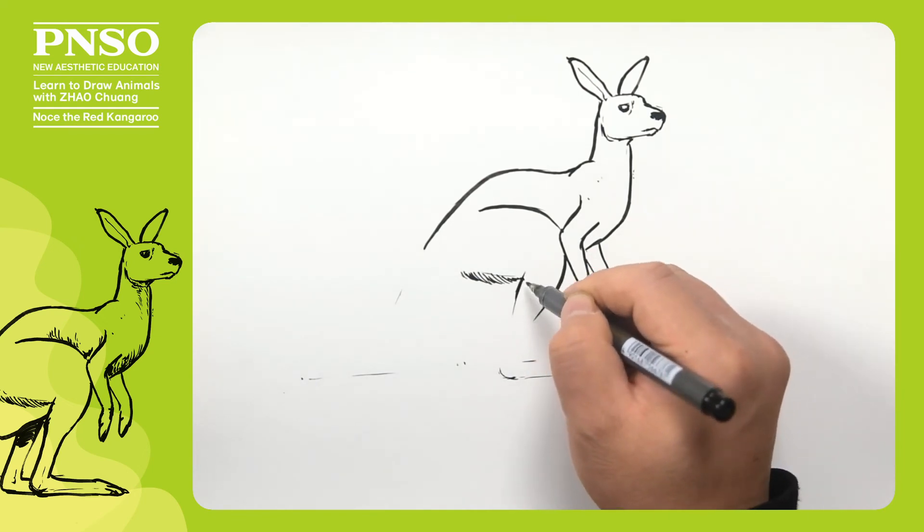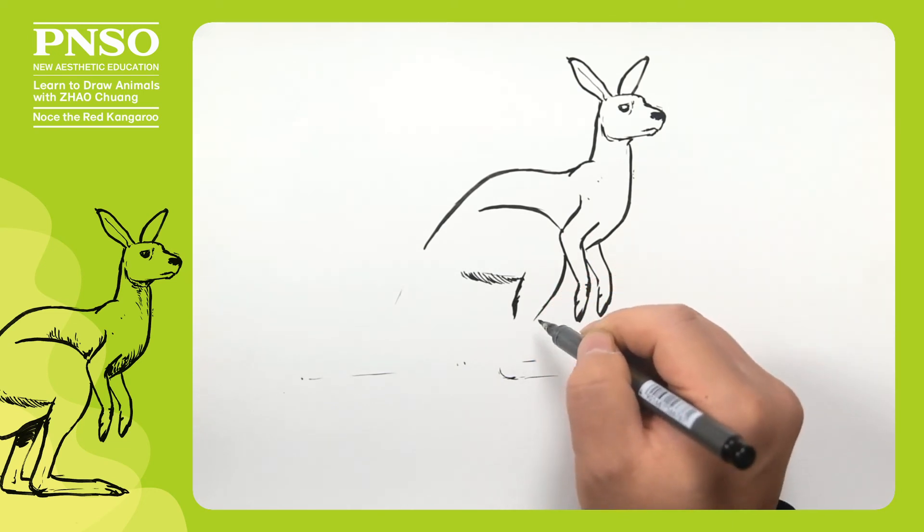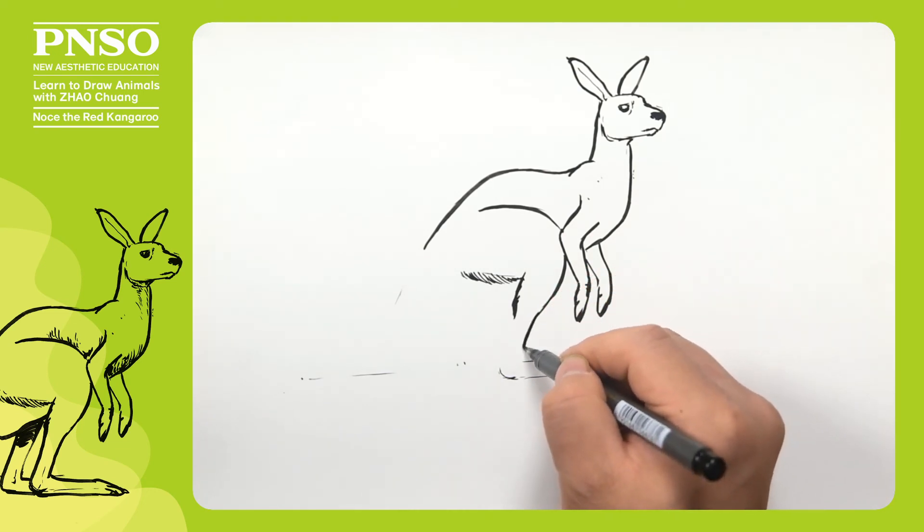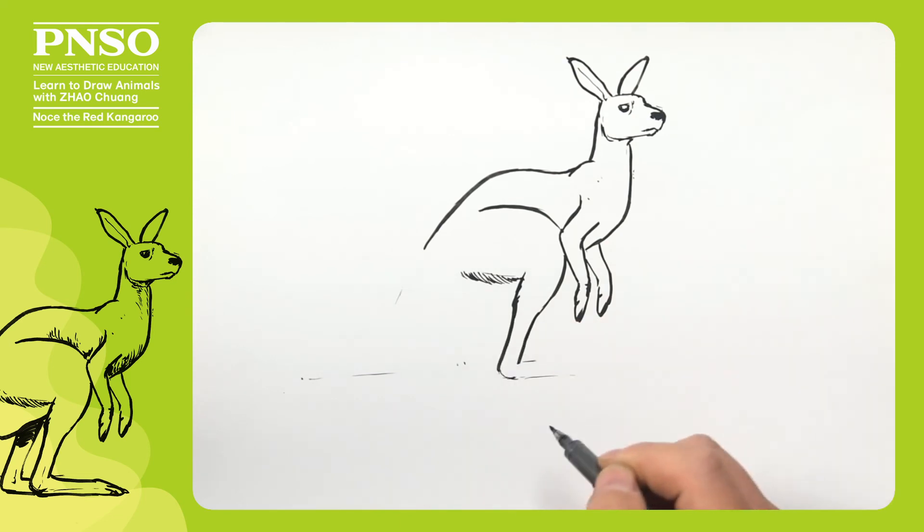Now let's draw its shank. At the root of its shank, we can draw thick muscles. Let's draw the end very thin and the part touching the ground thinner. Let's draw its strong ankle. Its sole touches the ground when it rests. Now let's draw the ends. We can draw nails at the end of its toes.